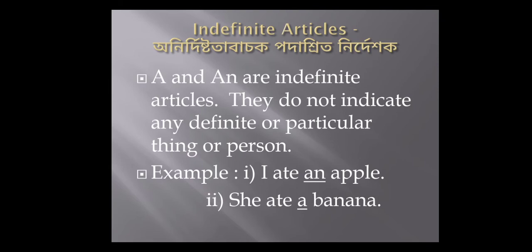Indefinite articles mean anadishto da bacho podashto niddisho. A and an are indefinite articles. They do not indicate any definite or particular thing or person. For example: I ate an apple. She ate a banana. Here, apple or banana are not definite. A and an are just showing the number.